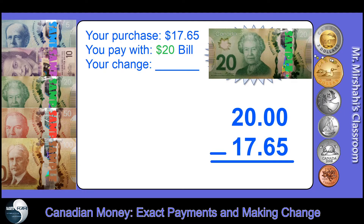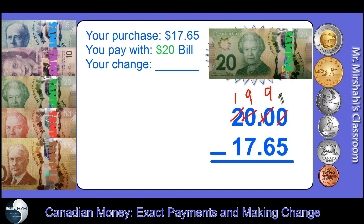We can do a subtraction here, but that's not the fastest way — that's not the best way — but we're going to do it first to show you what I mean. Zero take away five, you can't do that, so you borrow. We rearrange: that becomes ten, borrow again — nine. Ten take away five is five, nine take away six is three, nine take away seven is two. So I should get $2.35.